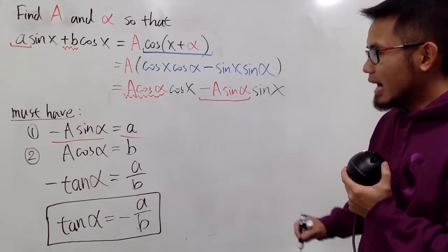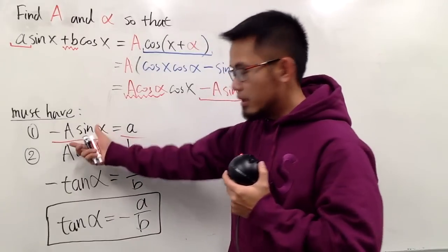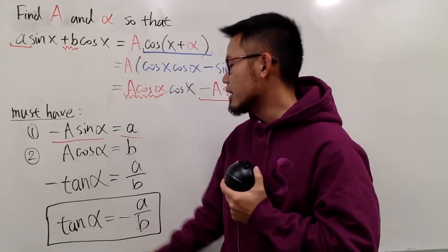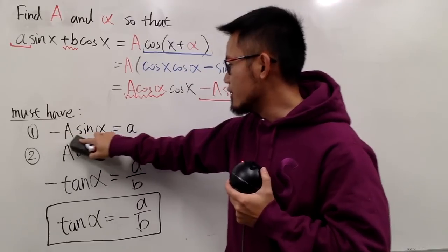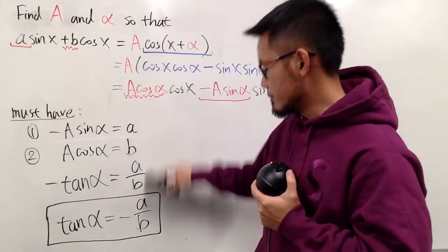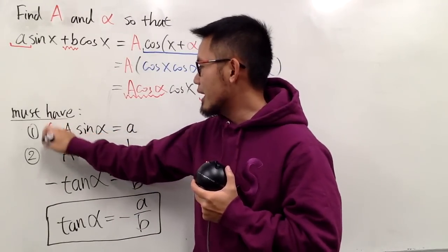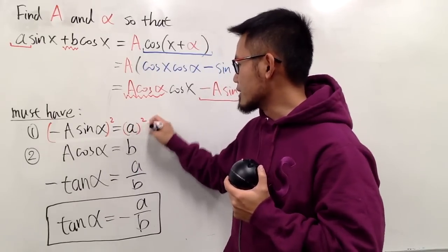On the other hand, what can we do? Well, earlier I just divided it, which is nice, because A and A cancel out. But now, I'm not going to divide. Let's do the following. An easy way to do this is that, let's just go ahead, square both sides here, square both sides here.